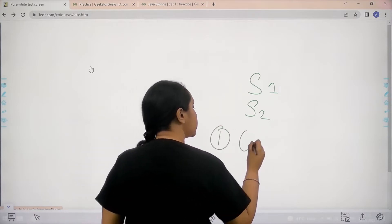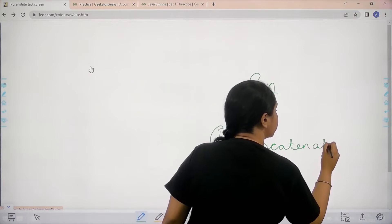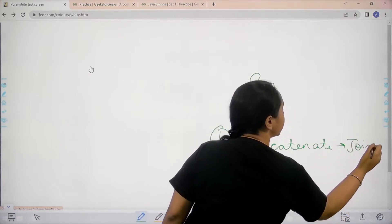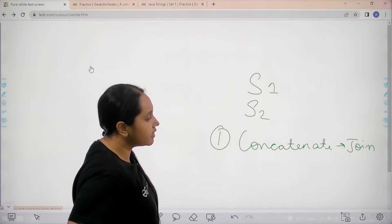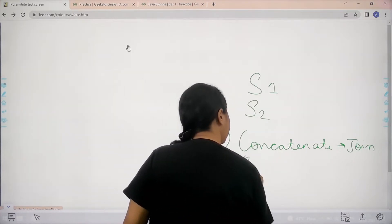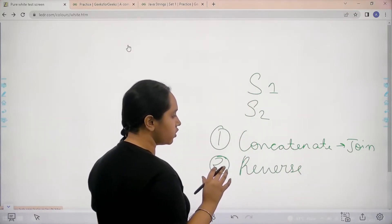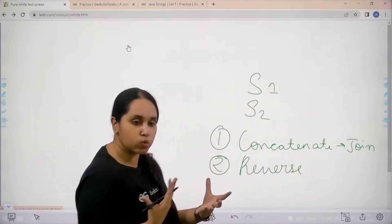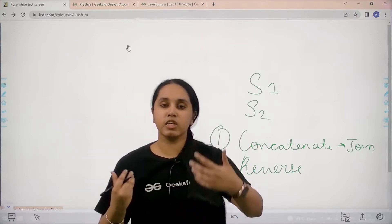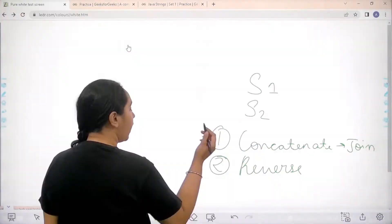First task is to concatenate them. That means concatenation means join them together. So the first step is we need to join them and then the second thing is we need to reverse it. So we concatenate both the strings and then we get a new string. After we get the new string, we need to reverse that new string.